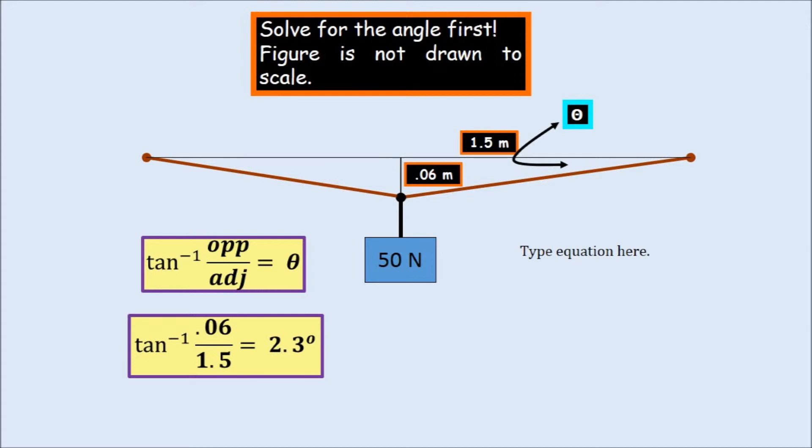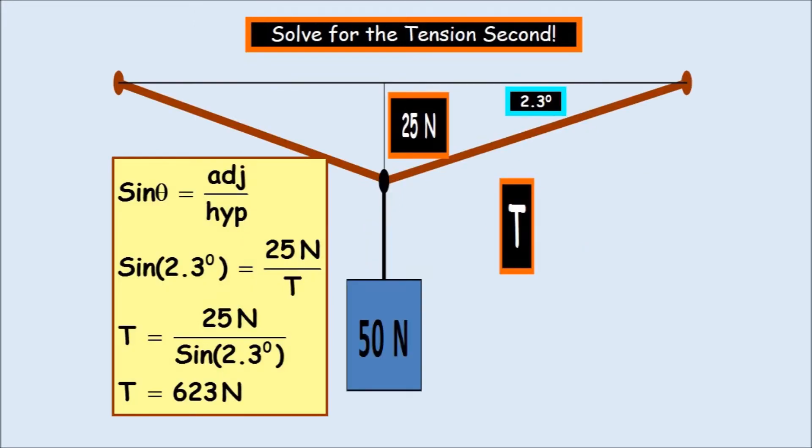And so solving for the tension, now that we know what the angle is, solving for the tension is going to be 625 Newtons. So you're taking a 50 Newton load and you're creating a tension of 623 Newtons. Unbelievable.